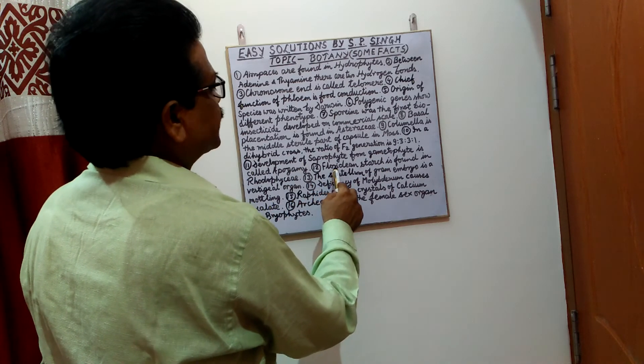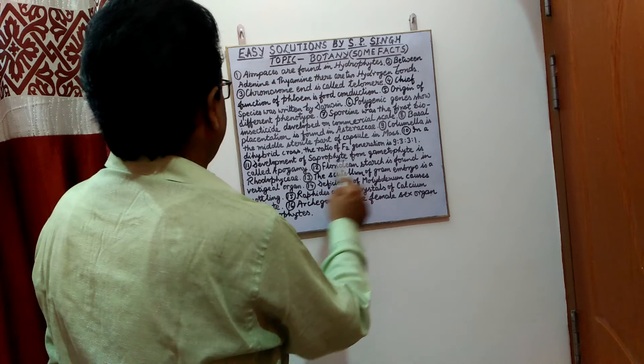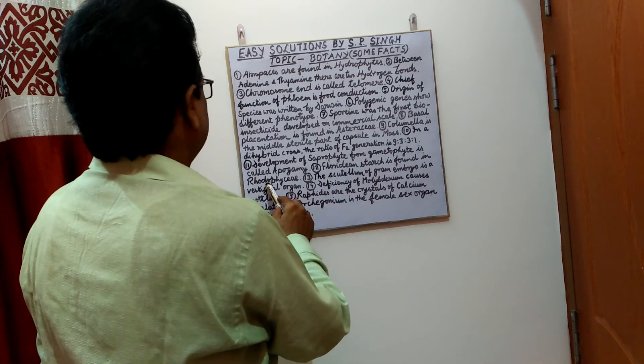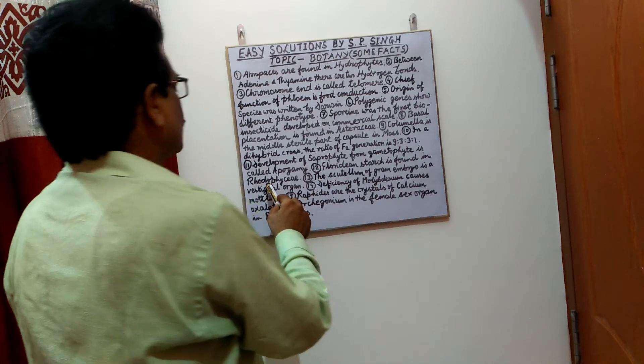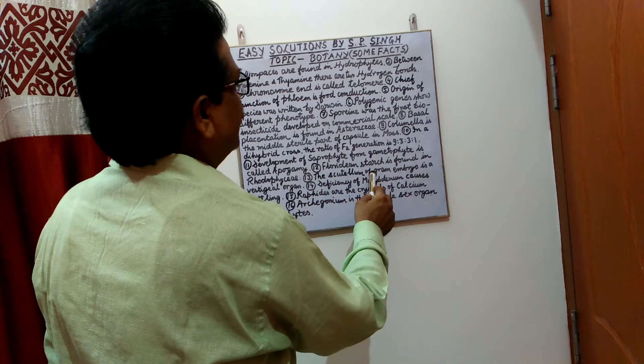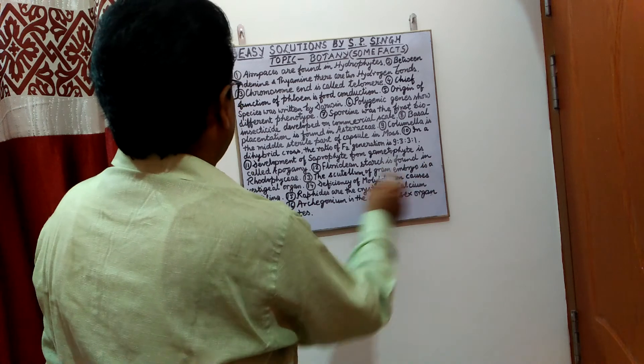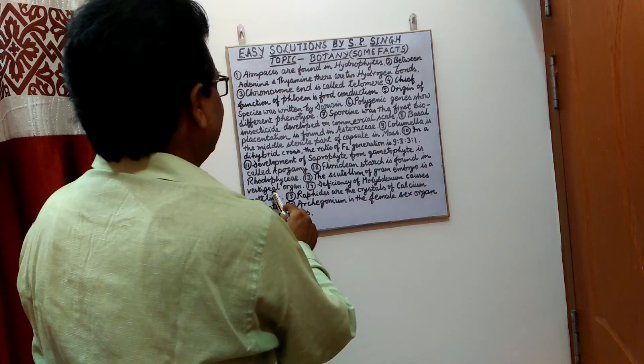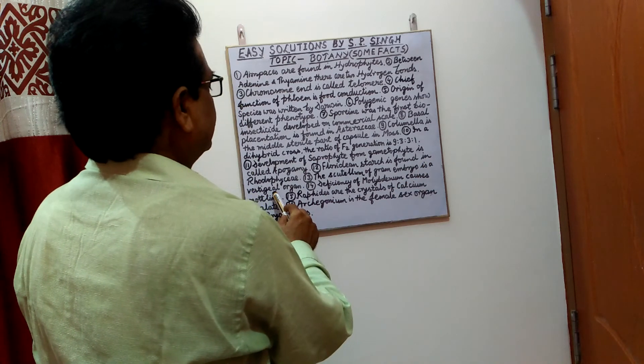Floridean starch is found in Rhodophyceae. The scutellum of gram embryo is a vestigial organ.